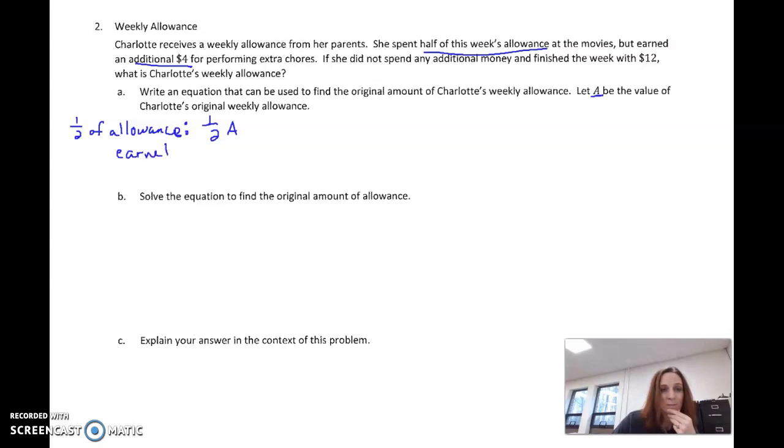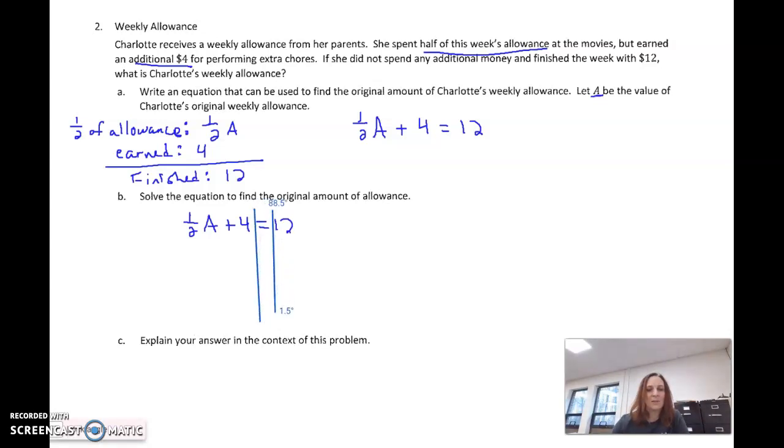And then we also have what she earned additionally. She earned an additional $4, and she finished the week with $12. So if we take half of her allowance, add four to it, we get $12. Now let's solve it.